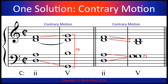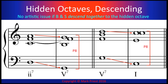One way of solving the problem of parallel octaves between bass and an upper voice is to use contrary motion. So it stands to reason that contrary motion would also resolve the dilemma of hidden octaves between bass and any upper voice, even the soprano. There is no artistic issue when both bass and soprano move downwardly into an octave.